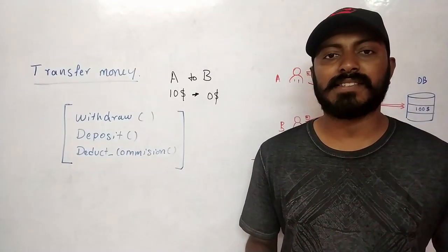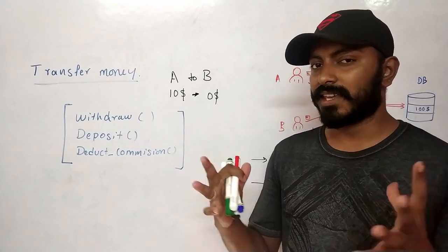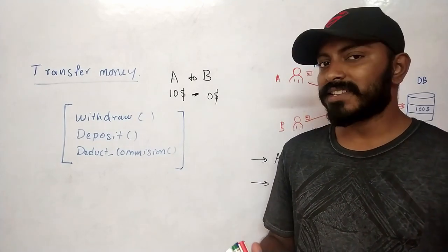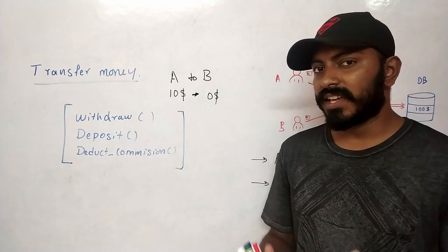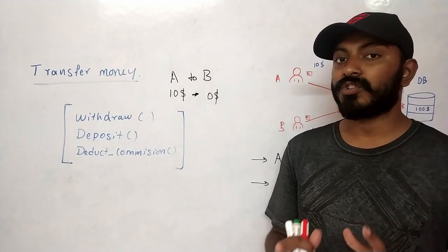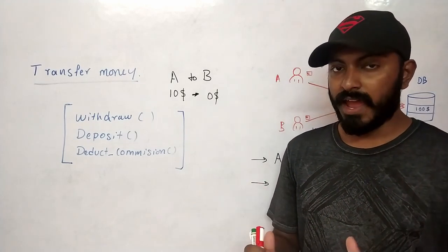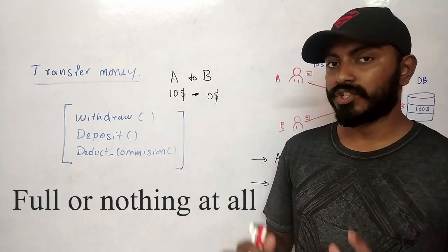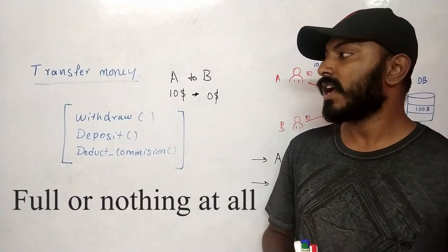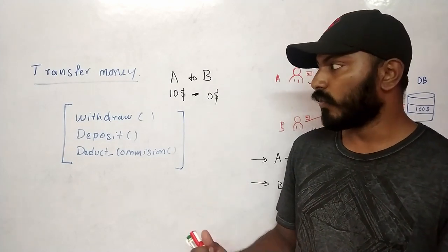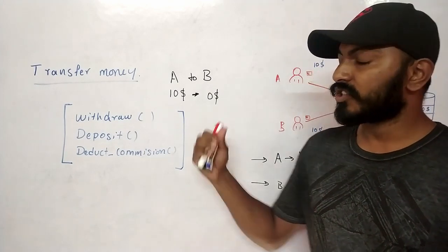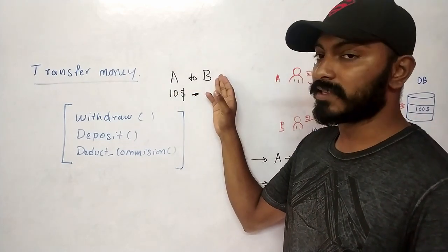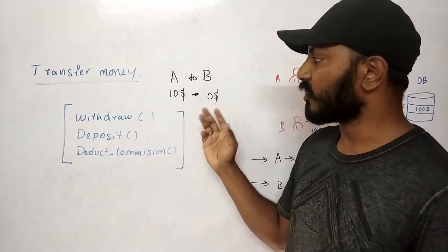Without transactions, a lot of things cannot be implemented reliably. A transaction is a unit of work that you want to treat as a whole — it should either happen in full or nothing should happen at all. To give a better perspective, let's take one more example involving money transfer.